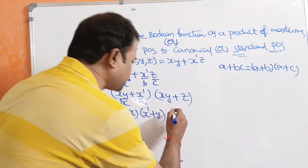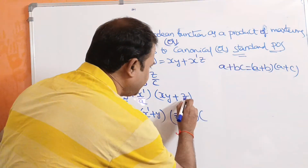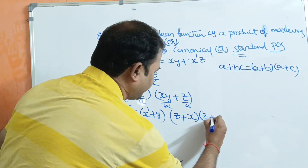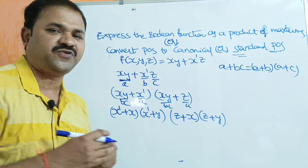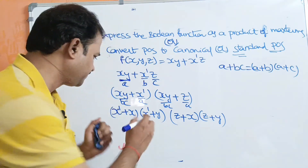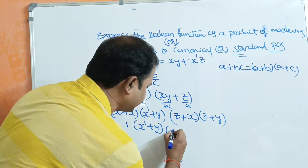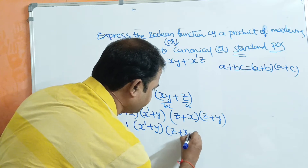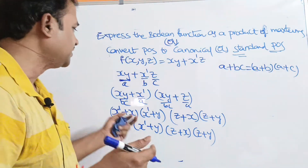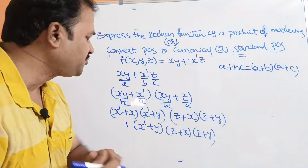Now (xy + z) is in the form a + bc, so we write (z + x)(z + y). We know the formula a + a' = 1. So (x' + x) = 1, giving 1·(x' + y)(z + x)(z + y). Since 1 times anything equals that thing, we get (x' + y)(z + x)(z + y).